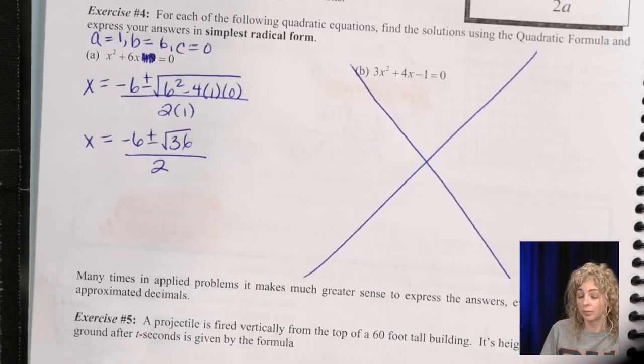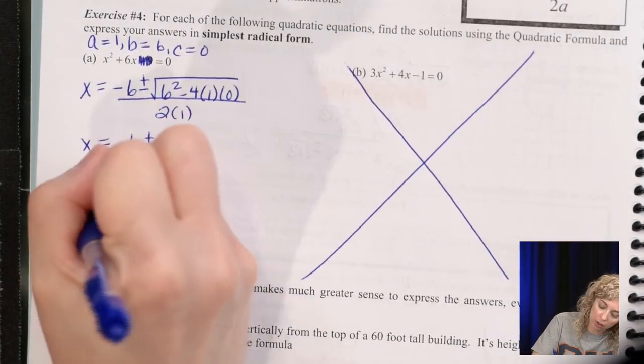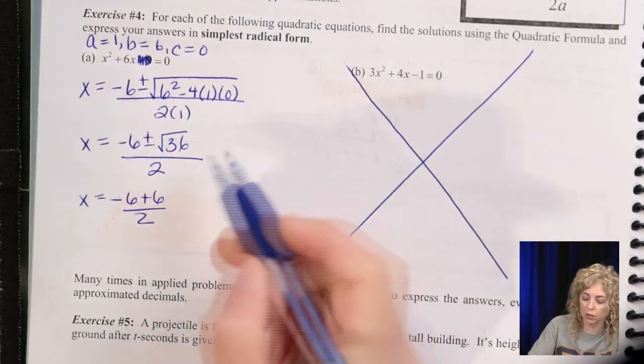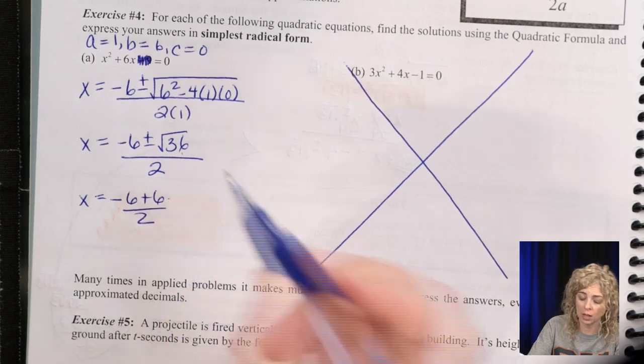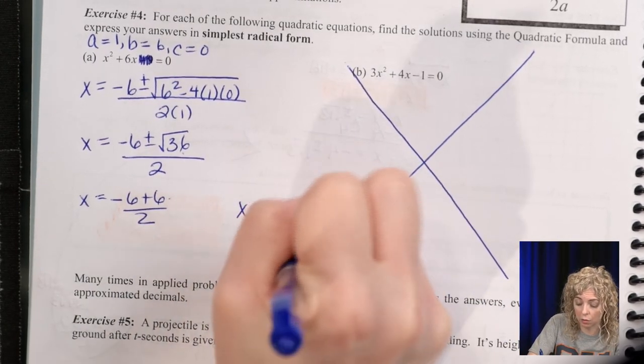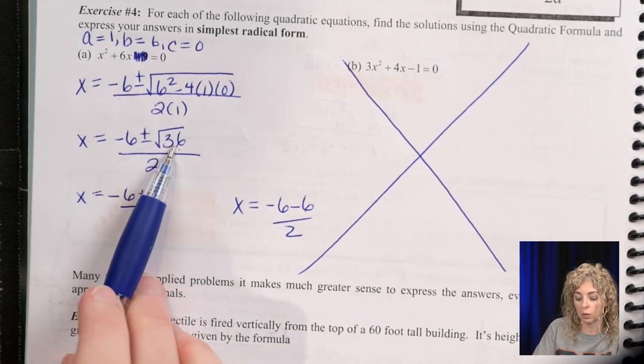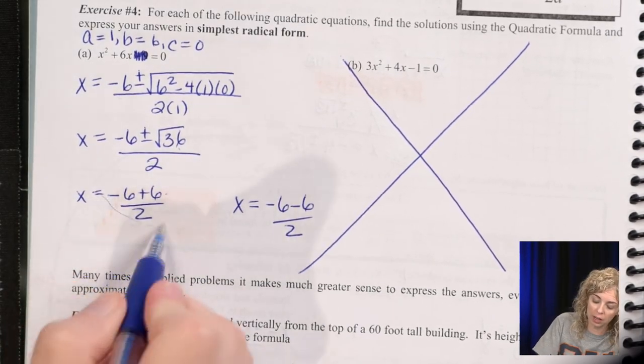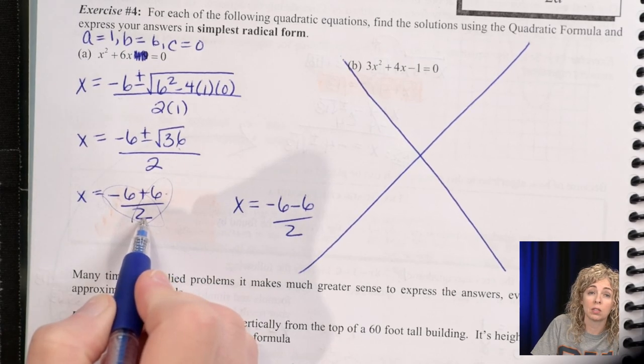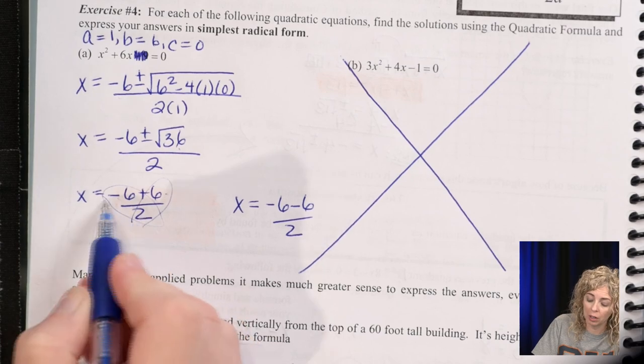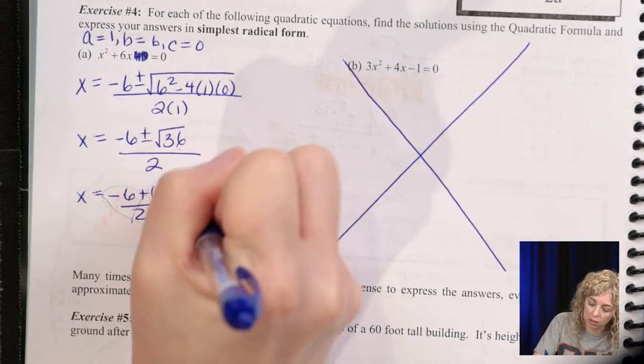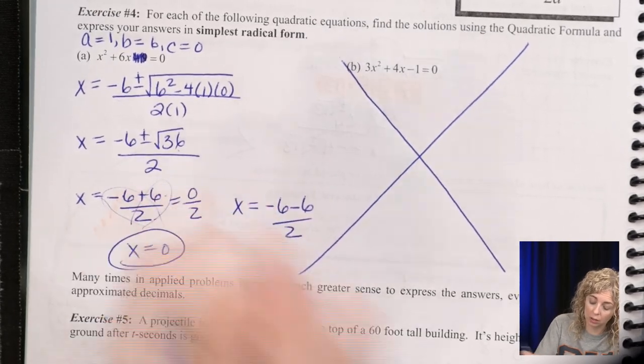So one answer is going to be negative 6 plus 6 over 2, because the square root of 36 is 6. And then the other answer is negative 6 minus 6 over 2. So again, one answer is with a plus minus. Now I could divide first, right? Because 6 is divisible by 2, and negative 6 is divisible by 2. But I'm going to combine first, then divide. So negative 6 plus 6 is 0 over 2, so 0 divided by 2 is 0.